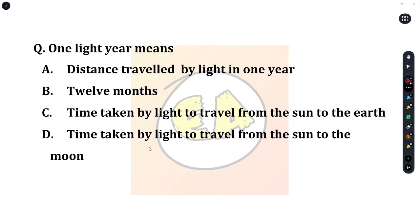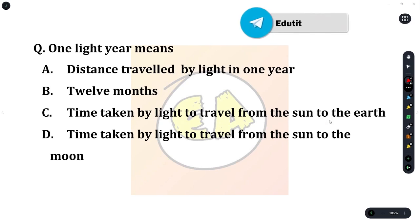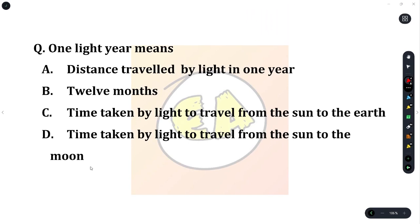Next question: one light year means? Option A: distance travelled by light in one year. Option B: 12 months. Option C: time taken by light to travel from the sun to the earth. Option D: time taken by light to travel from the sun to the moon. The correct answer is Option A — distance travelled by light in one year.